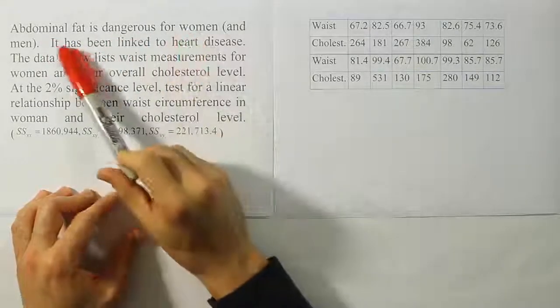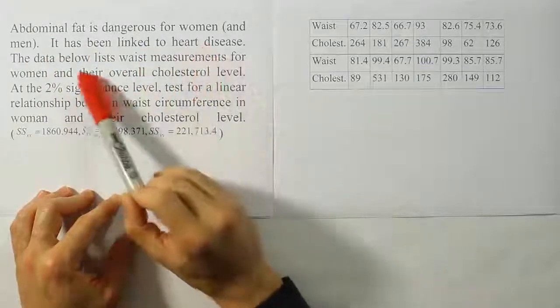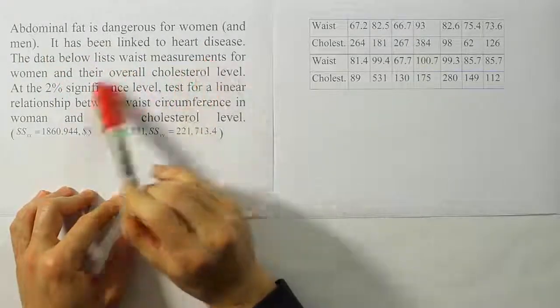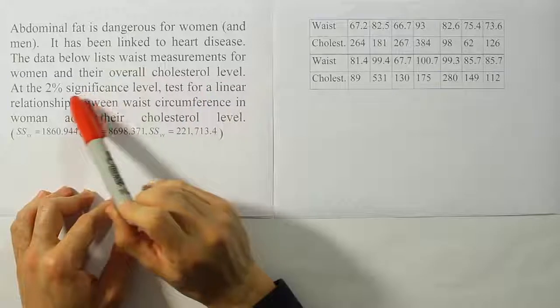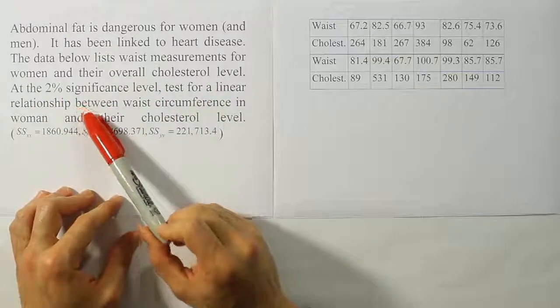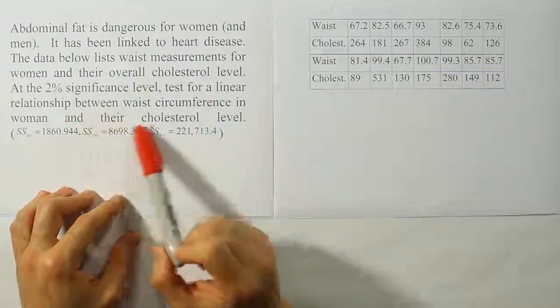Abdominal fat is dangerous for women and men. It has been linked to heart disease. The data below lists waist measurements for women and their overall cholesterol level. At the 2% significance level, test for a linear relationship between waist circumference in women and their cholesterol level.